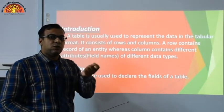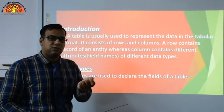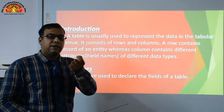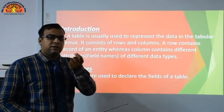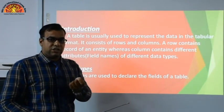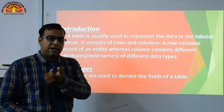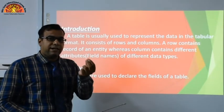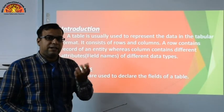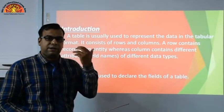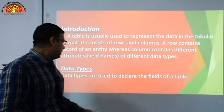For example, in the first row: roll number 101, name Nisha, marks 75. This is how data varies — different rows contain different types of data.